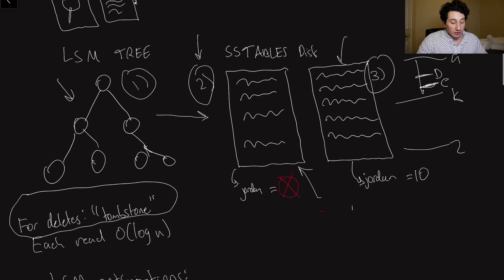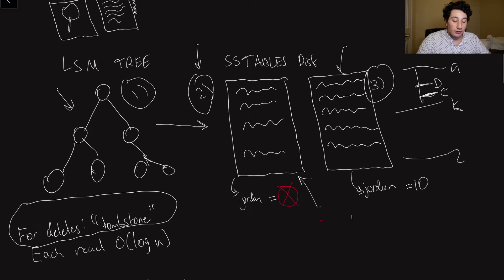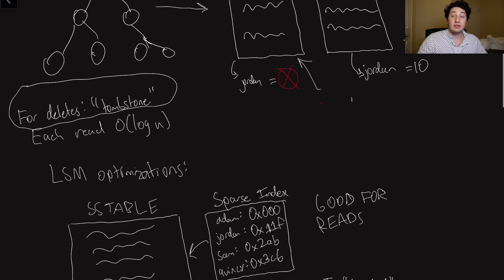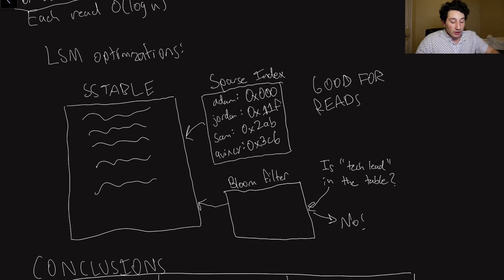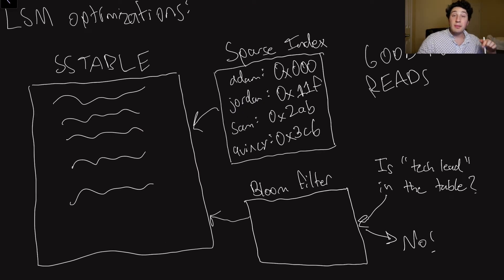So I've basically said to you now recall that every single time we do a read we first check the LSM tree then we check all of our SS tables on disk in the order that they were submitted or basically rather reverse chronological order. So what we're going to actually go ahead and get into now are some LSM tree optimizations right? Because that read process that I've described alone can actually take a pretty long time and so there are a few things that we can do to speed this up especially as it pertains to the tables on disk.